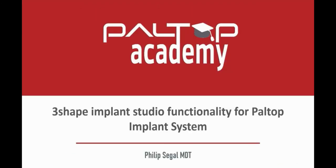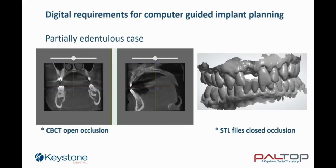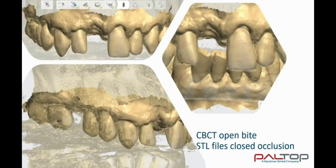Now that we have reviewed some of the prosthetic benefits of computer-guided surgery, let's move on to 3Shape Implant Studio for the Paltop implant system. What are the digital requirements for a partially dentureless case? A CBCT must be taken, preferably in open occlusion. Try placing cotton rolls in the posterior segment at the time of acquisition. This will result in approximately 5-6 mm of open occlusion in the anterior segment. In addition, surface scans of tooth and tissue structure of both the upper and lower jaw will be required. This can be done through an intraoral scan or optical scans of the plaster model.